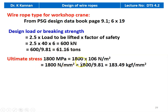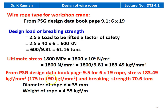The ultimate stress is given as 1800 megapascal, which is 1800 newton per millimeter squared, equal to 1800 divided by 9.81 equal to 183.49 kilogram force per millimeter squared. From the PSG design data book page number 9.5 for 6 by 19 wire rope, the stress 183.49 falls between 175 and 190 kilogram force per millimeter squared. The breaking strength is 70.6 tons, which is higher than the required 61.16 tons, so we take 70.6. For the breaking strength of 70.6 tons, the diameter of the rope is 35 millimeter and the weight of the rope is 4.55 kilogram force per meter.